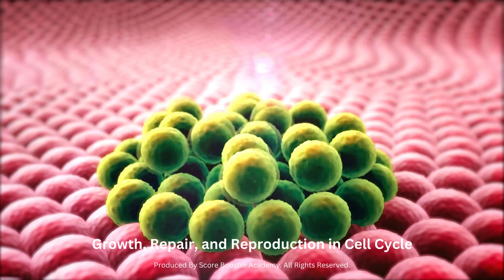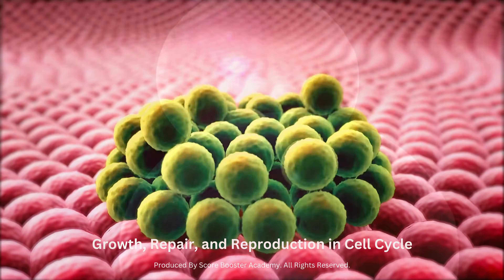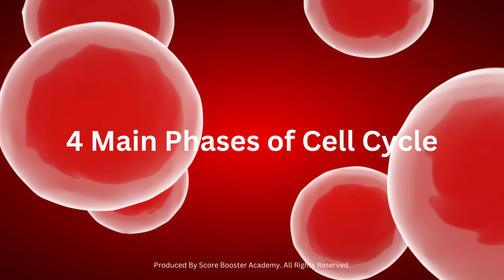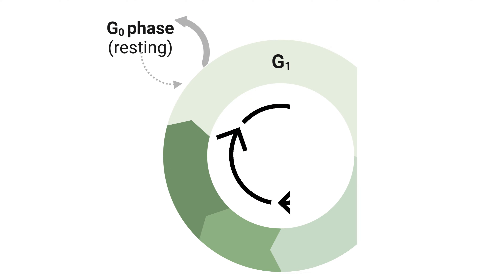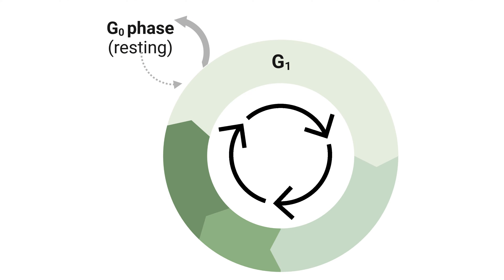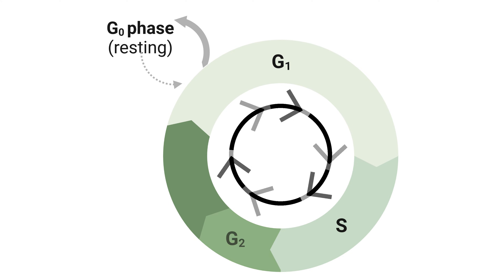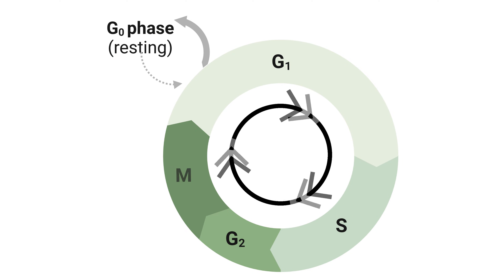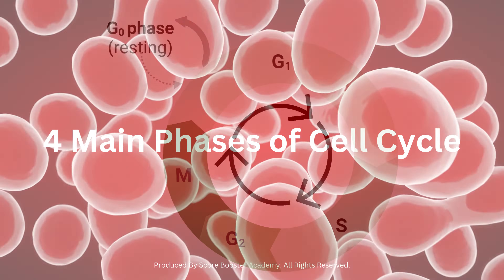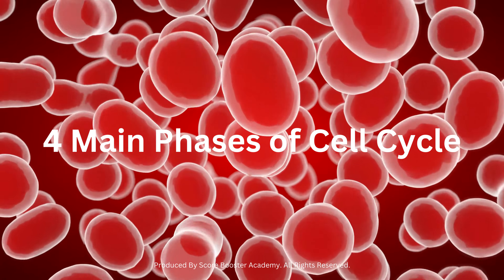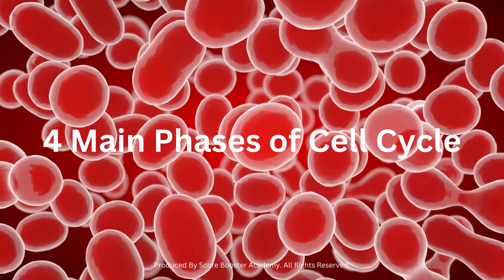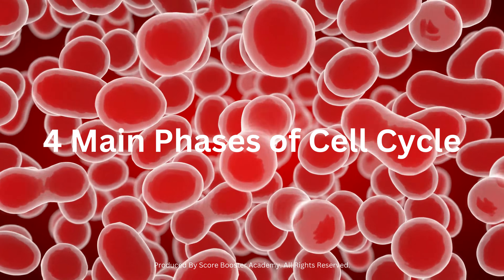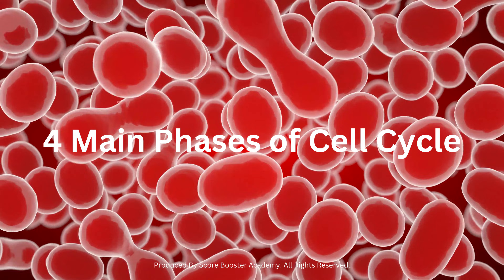The cell cycle is typically divided into four main phases: G1 (Gap 1), S (synthesis), G2 (Gap 2), and M (mitosis). Each phase has specific objectives and checkpoints to ensure accurate progression.